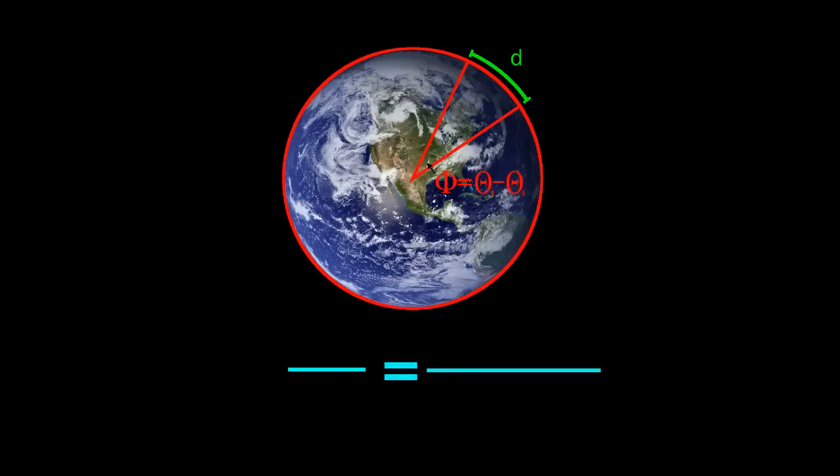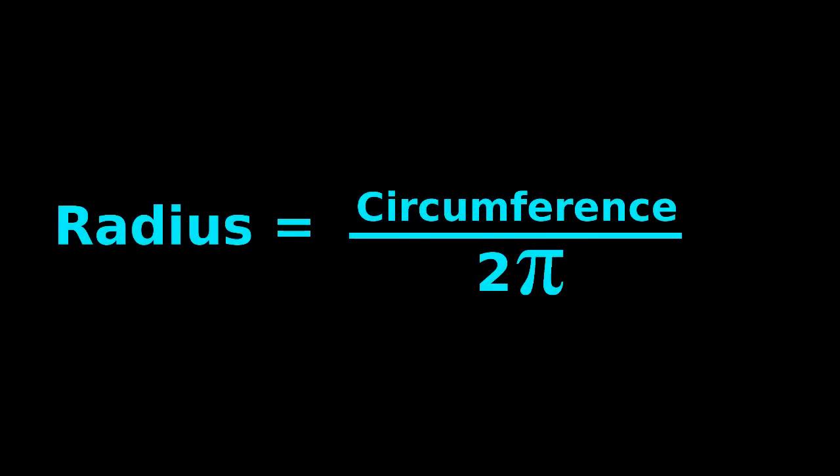Under the approximation that the Earth is a perfect sphere, we can relate the angle separating the pair to the total number of degrees in a circle, 360, to the ratio of the ground distance separating the pair and the total circumference of the Earth. That means we get a measurement of the circumference of the Earth for every pair, and dividing that by 2 pi gives us the radius of the Earth.